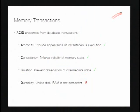Atomicity gives us the appearance of instantaneous execution — either everything happened or nothing happened. Consistency enforces the validity of the memory state, ensuring memory is in one state or another and not in some inconsistent, unexpected state. Isolation prevents observation of intermediate state by other transactions. Transactions don't give us durability — that's the one thing we give up with memory transactions, since RAM is not intrinsically persistent. So we usually talk about just the ACI properties for memory transactions.